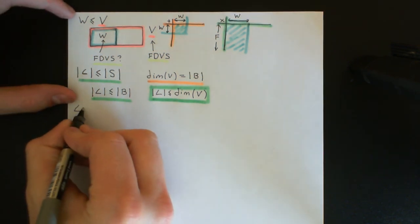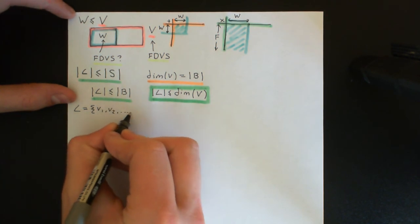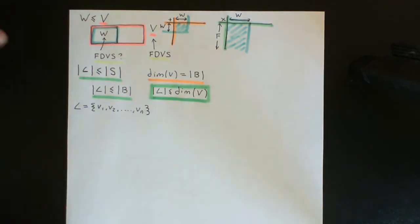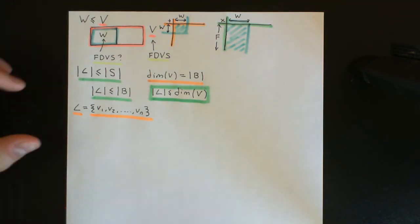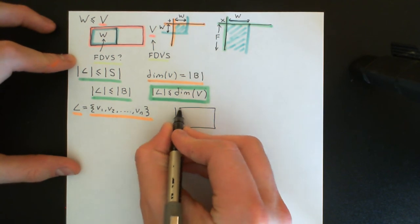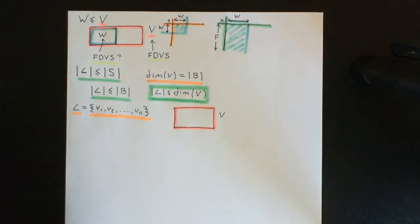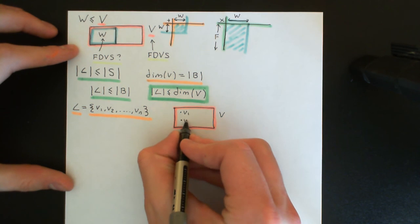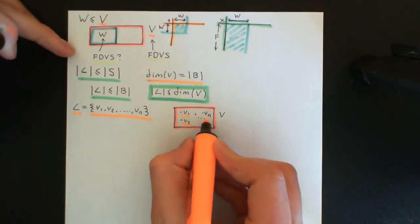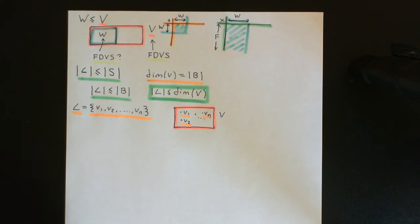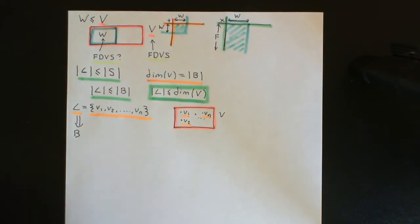Let's say L is a set of linearly independent vectors of capital V: {V1, V2, ..., Vn}. I want to stress we're talking about a vector space, not subspaces at the moment. In picture form, I've got my vector space capital V, and all of these vectors V1, V2, ..., Vn are elements of it. This set is assumed to be linearly independent. We're going to use the result boxed in green to show that we can add vectors into this set to make it into a basis.